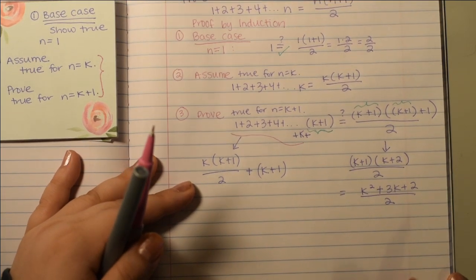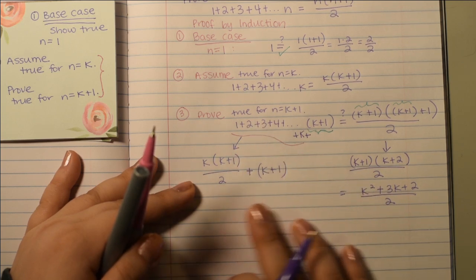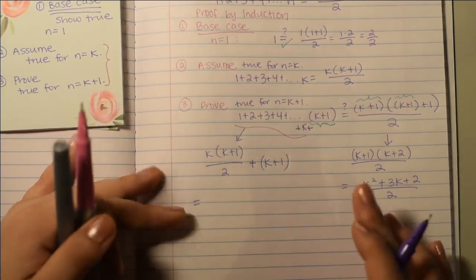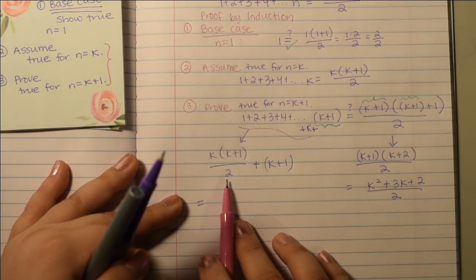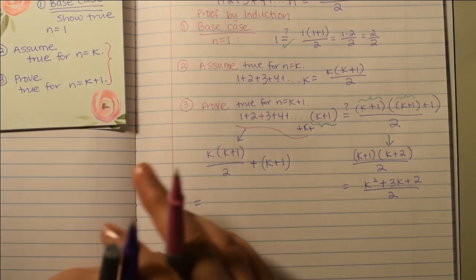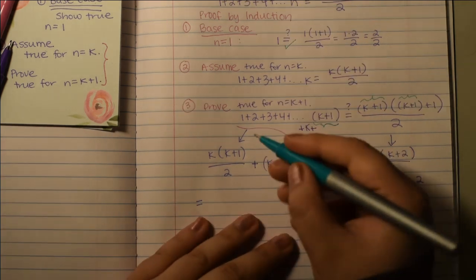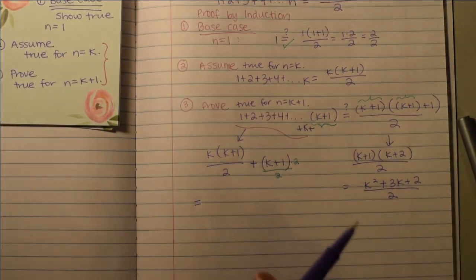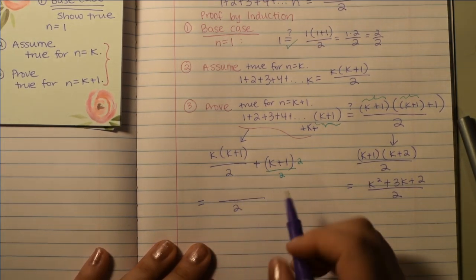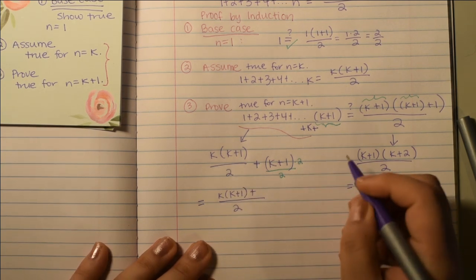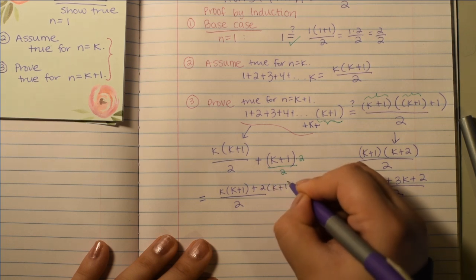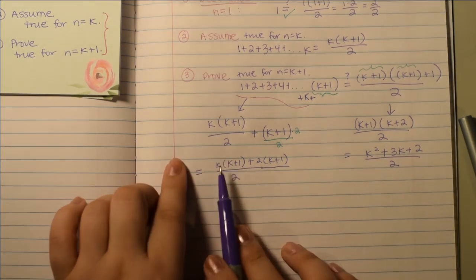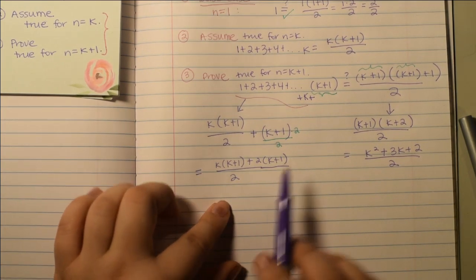So, the 1 to k is k times k plus 1 over 2, and we can assume that is true because we did that in part 2, and then we add the next term, which would be the k plus 1. And then the question is still, does this thing, whatever this thing equals, does that equal to this side? So, this equals, we're just gonna do a little bit of algebra work with this. We see that we have a fraction with the denominator of 2, and since this is just on the side here, we need to find a common denominator. So, we'll put a 2 here, but we'll also multiply the top by 2 so that when we add fractions, we keep the common denominator. And so, we have k times k plus 1 plus 2 times k plus 1. And so, at this point, we can actually see that we can factor out this k plus 1 and get k plus 1 times k plus 2 over 2, which is this.